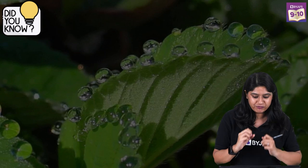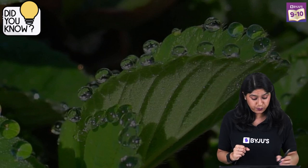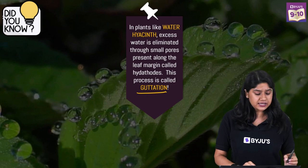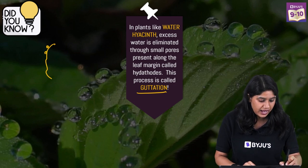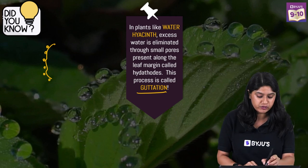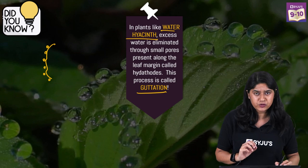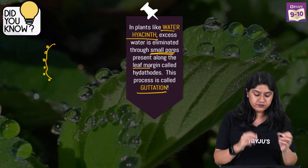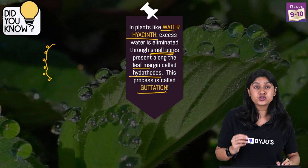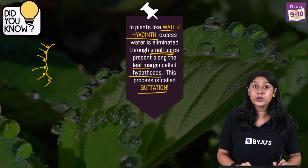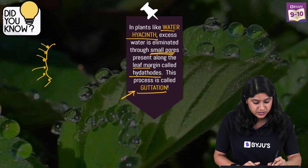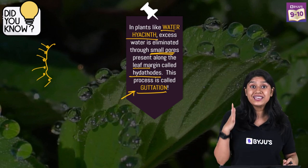Here is an interesting fact: apart from transpiration, we have another process called guttation. In guttation, water droplets appear on the leaf margin, which we can see in different plants. The elimination of water occurs through the leaf margin via structures called hydathodes. From these pores, excess water moves out. So apart from transpiration, guttation is another method that plays a very important role in removal of excess water.